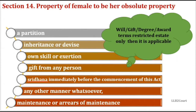Since the daughter is a female, she will again hold it as a limited owner only. Assume the daughter has a son. After the daughter's death, the son will get the property as an absolute owner because he is male, and he will now become the last male holder. So after daughter's son's death, the property will go to heirs of the last male holder — that is, daughter's son's heirs — and not the heirs of F.